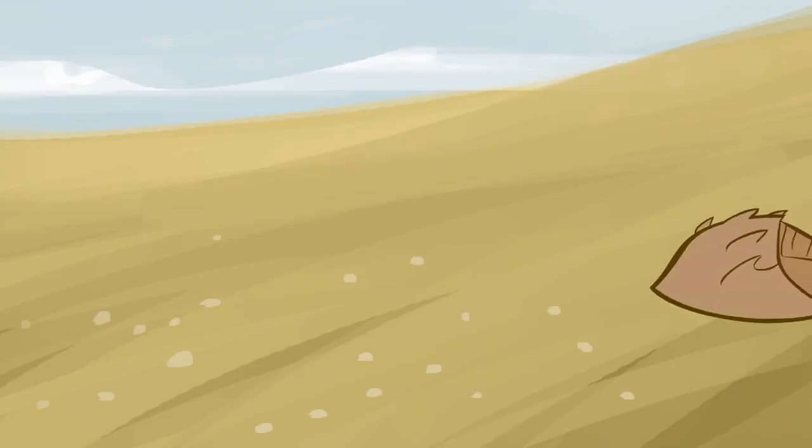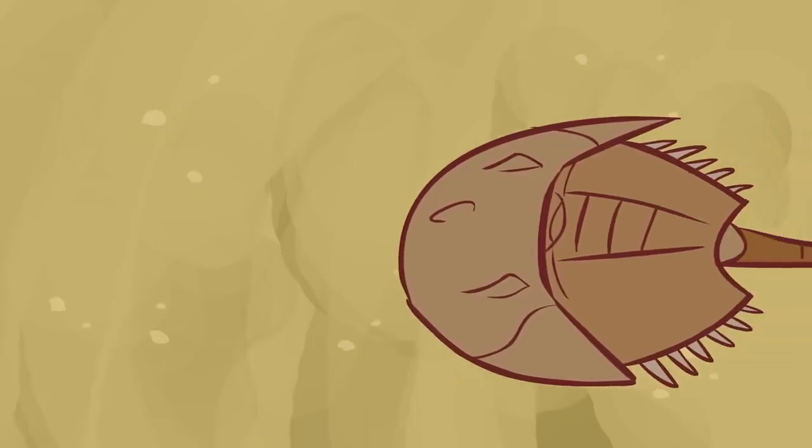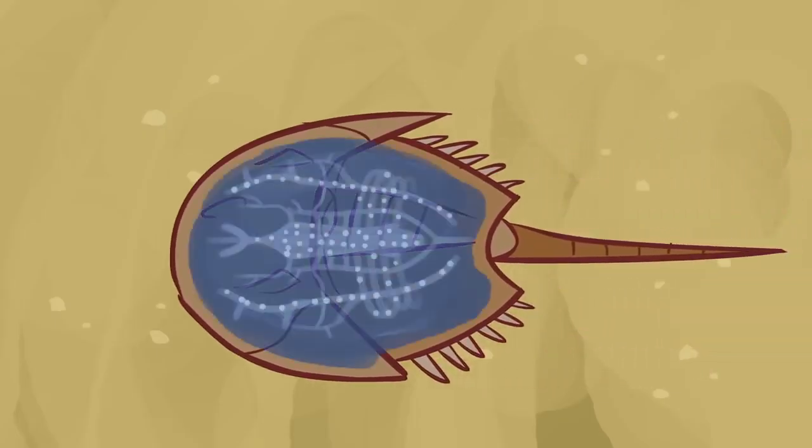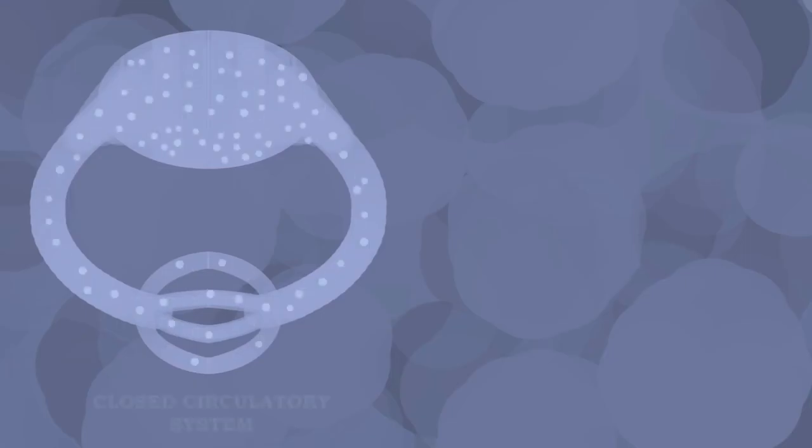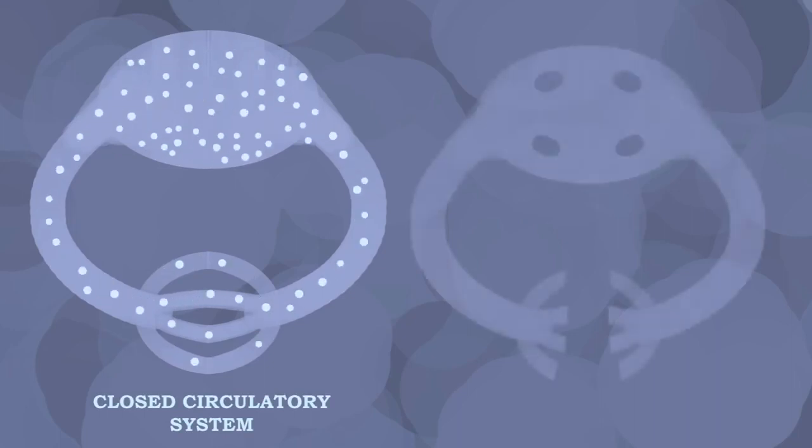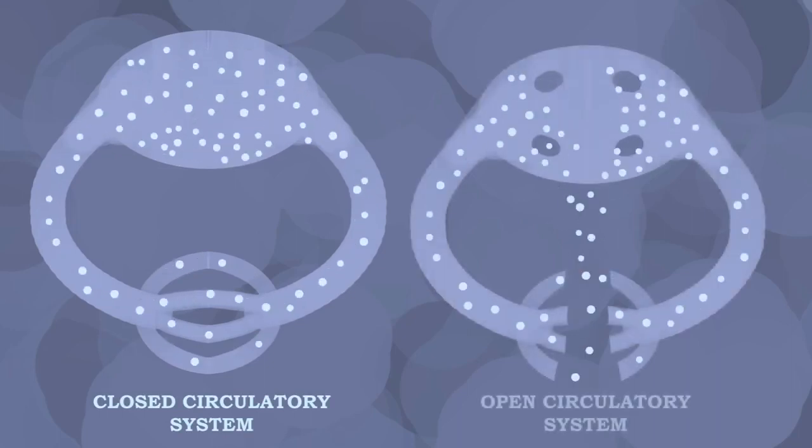How did horseshoe crabs end up with such special blood? Like other invertebrates, the horseshoe crab has an open circulatory system. This means their blood isn't contained in blood vessels like ours. Instead, horseshoe crab blood flows freely through the body cavity and comes in direct contact with tissues.